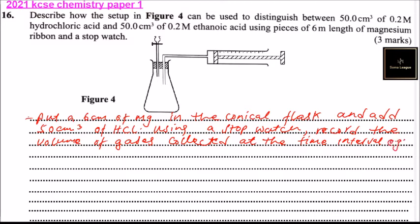e.g., 15 cm³. Repeat the experiment using 50 cm³ of ethanoic acid.